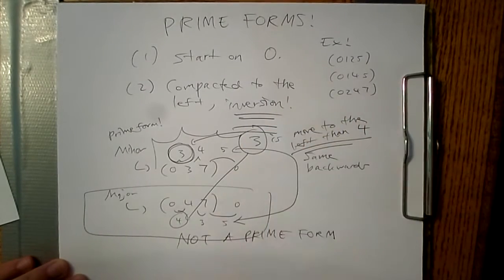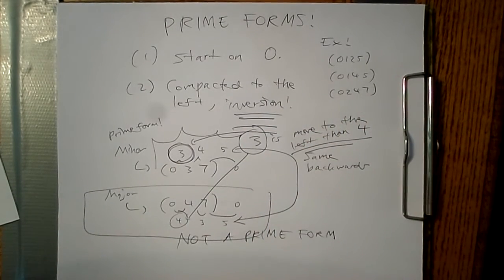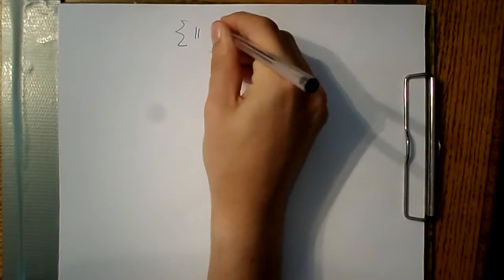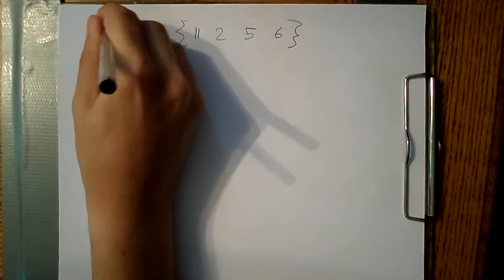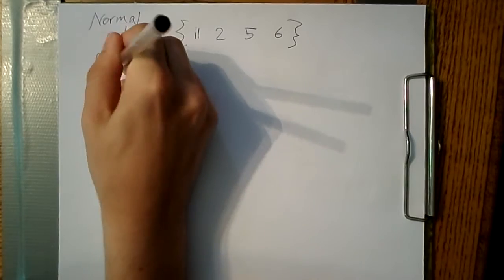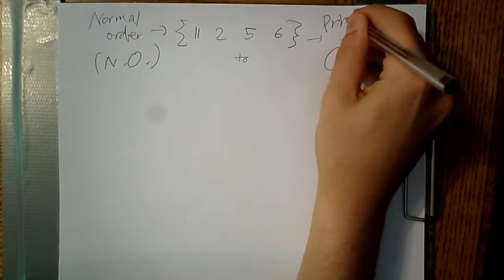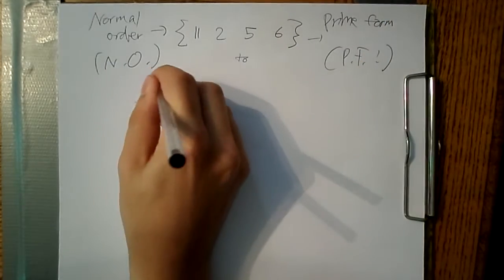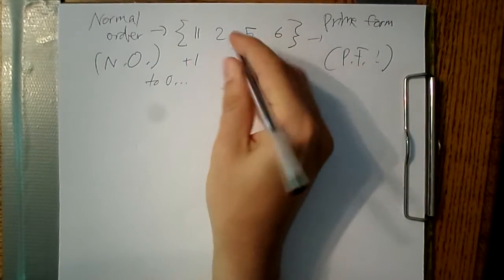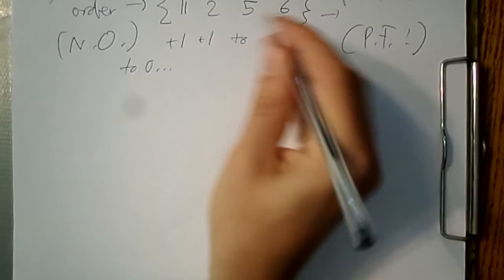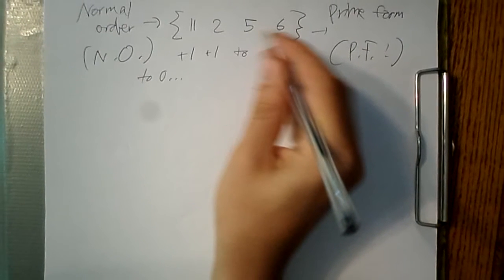Now, let's try turning our normal order that we had, 11, 2, 5, 6, into a prime form. We already know that it is the most compacted from the first note to the last one, because it has to be that from normal order. Now, we just need to invert it and see if the inversion is compacted more to the left. Whichever version is more compacted to the left is the prime form. But first, let's transpose the normal order to zero to make things easier.